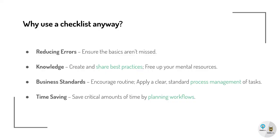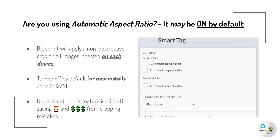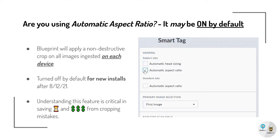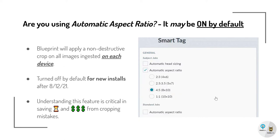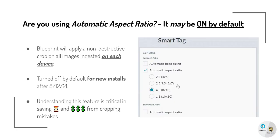To kick us off, one of the more common issues we've seen is a misconfiguration with Blueprint's Automatic Aspect Ratio feature. Keep in mind this may be turned on by default. Blueprint can apply a non-destructive crop on all images added in on each device. This feature will be turned off by default for new installations after August 12, 2021.